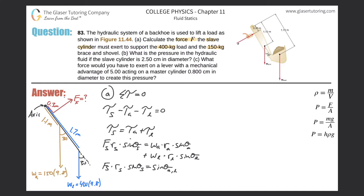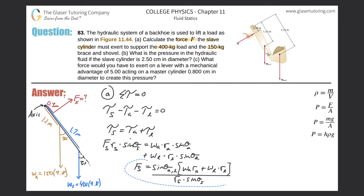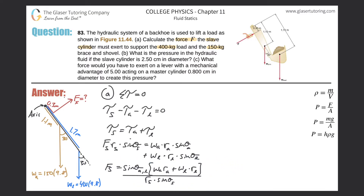So we have: force of slave cylinder times lever arm of slave cylinder times sine of theta_s equals sine of 30° times (weight of arm times lever arm of arm plus weight of load times lever arm of load). Dividing both sides by lever arm of slave cylinder times sine of theta_s gives us the formula for the slave cylinder force. Let me box that formula.